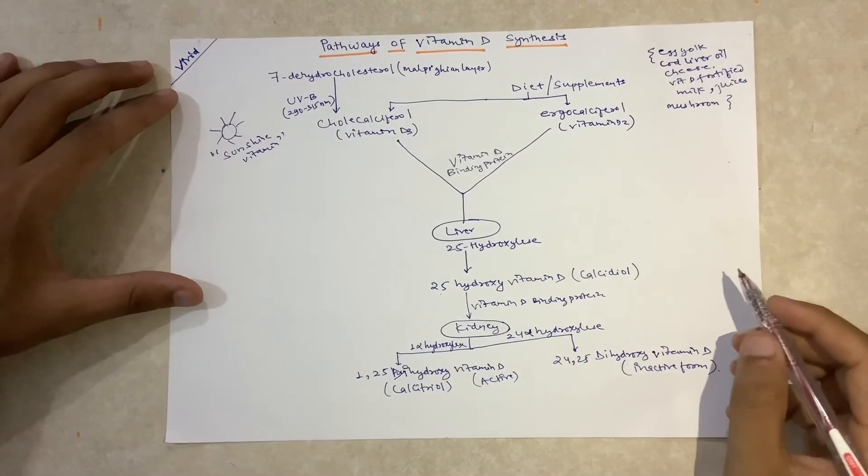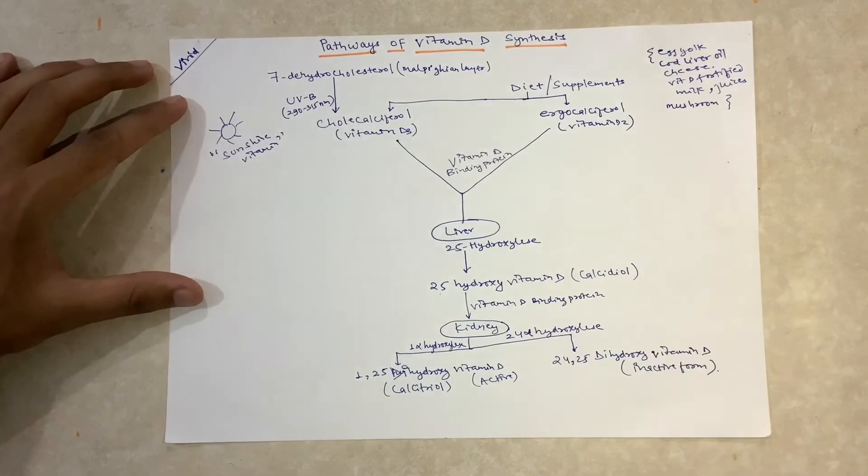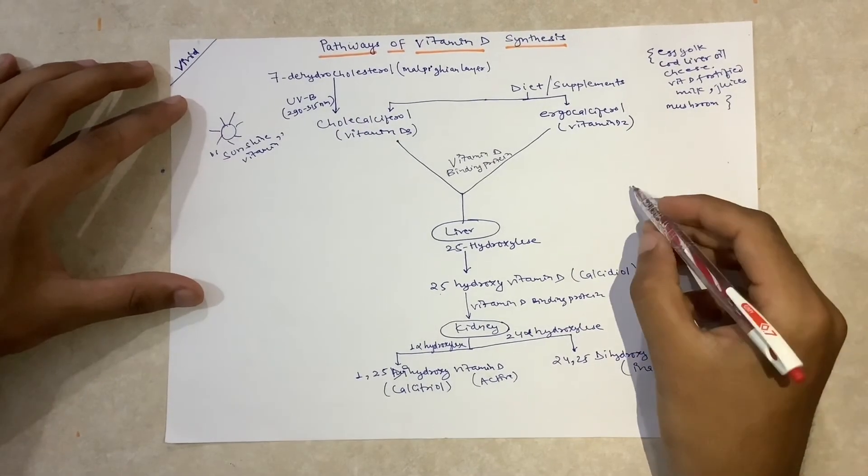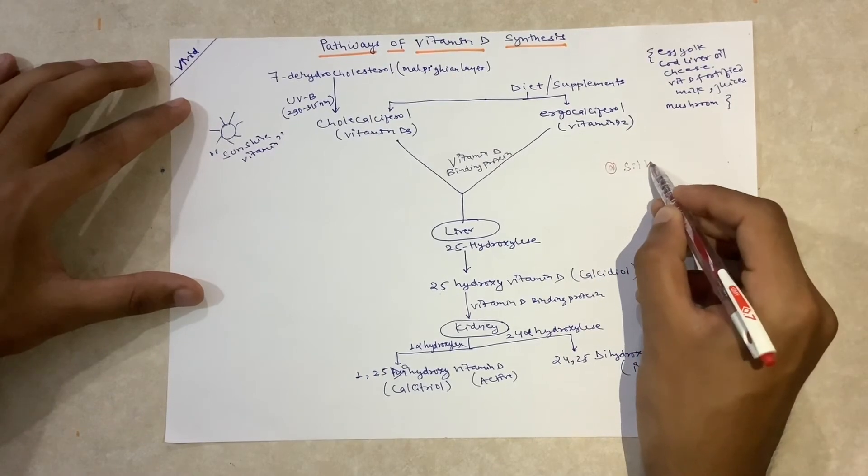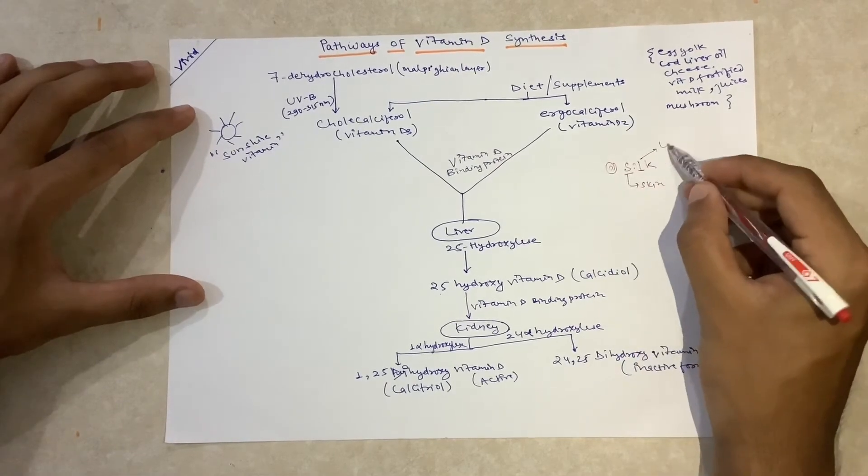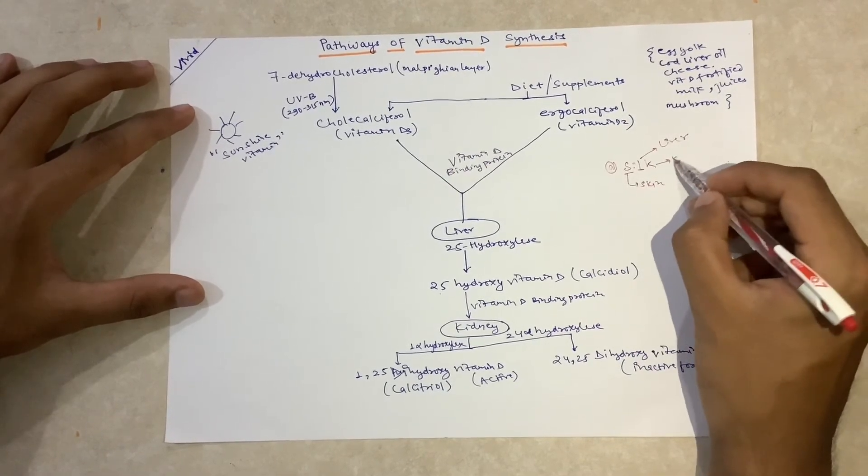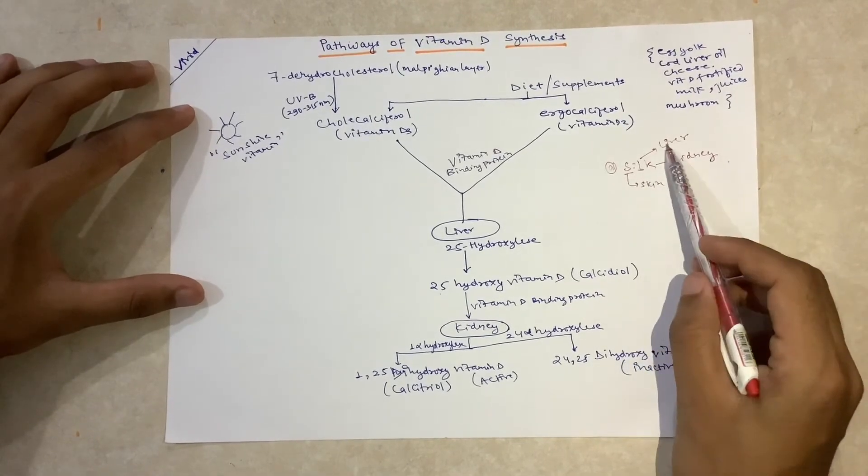I use a simple trick to remember the sequence in which organs the metabolism of vitamin D occurs. I use a mnemonic called SILK, where S stands for skin, then it goes to liver, and finally to kidney.